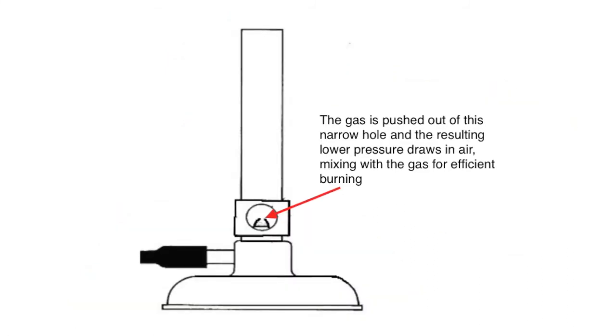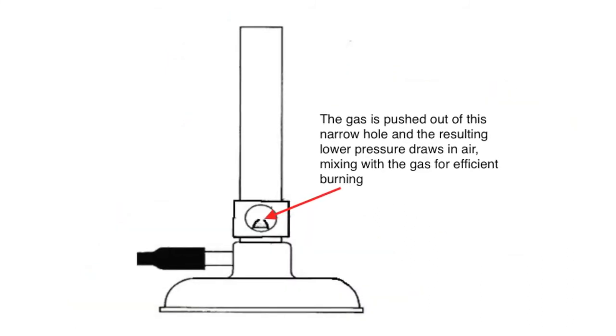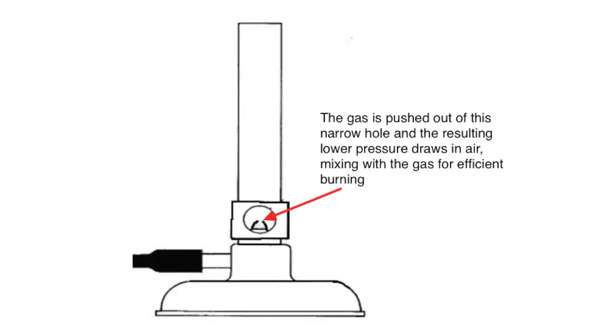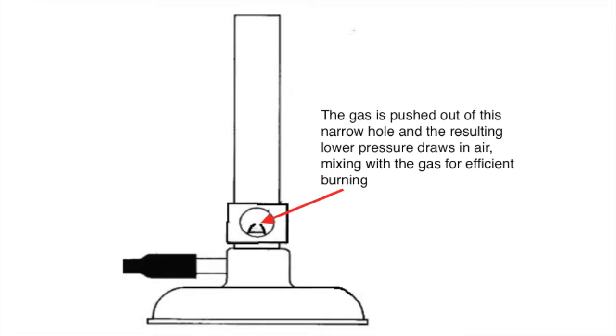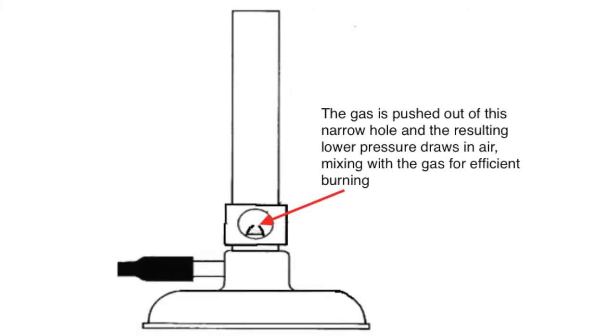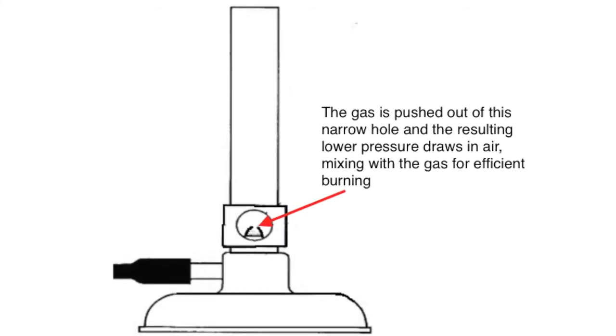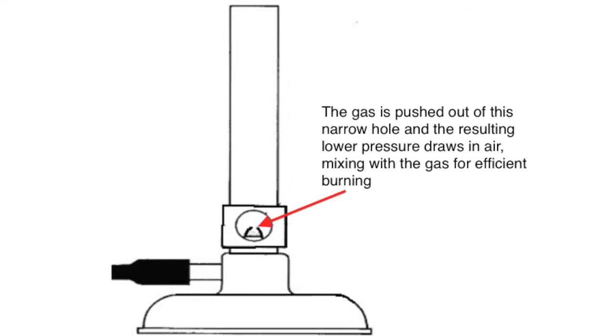The Ponson burner illustrates the idea used in most gas burners to mix the fuel gas with air. The gas is pushed through a fine hole and as it rushes out the resulting lower pressure draws in air. It mixes well with the gas and that results in efficient burning.